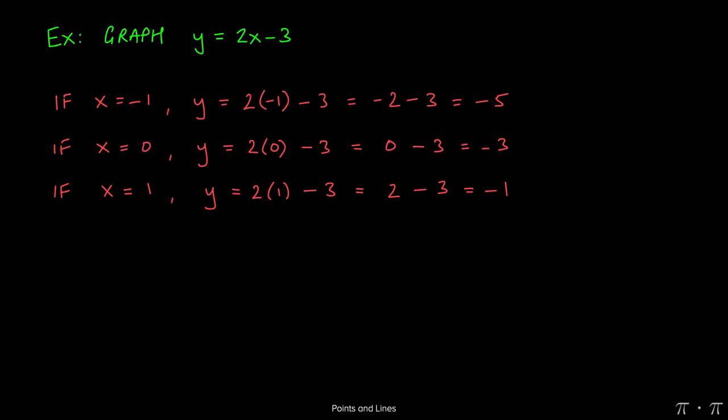If we find the y-coordinate for when x is equal to 1, we do the same process as we've done before. Two times the 1 gives us 2, 2 minus 3 gives us negative 1.